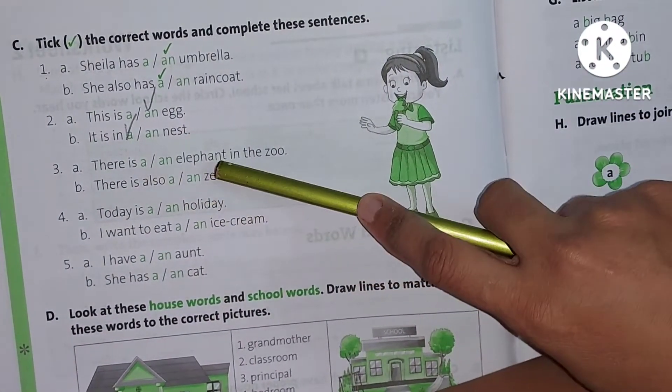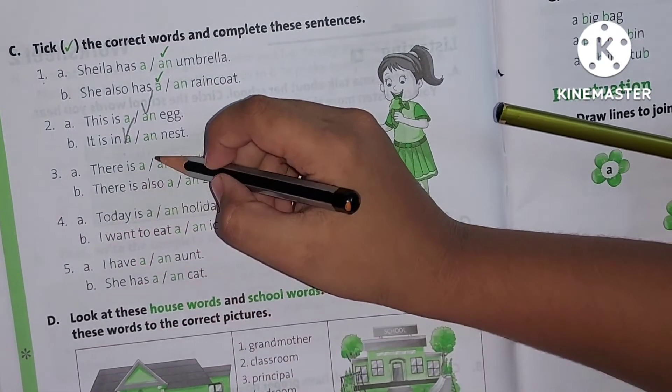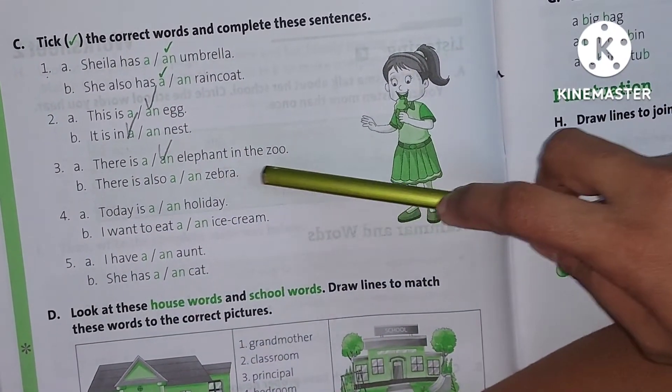There is an elephant in the zoo. A or AN? AN. Good. There is an elephant in the zoo.